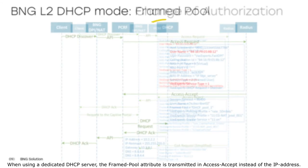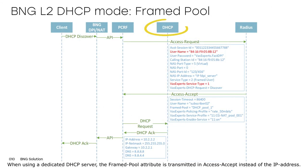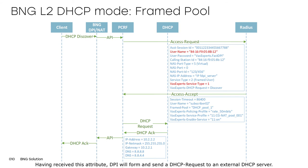When using a dedicated DHCP server, the framed pool attribute is transmitted in access accept instead of the IP address. Having received this attribute, DPI will form and send a DHCP request to an external DHCP server.